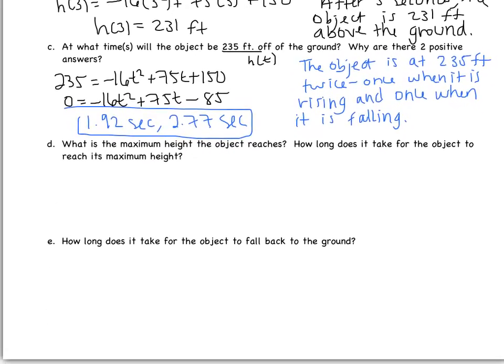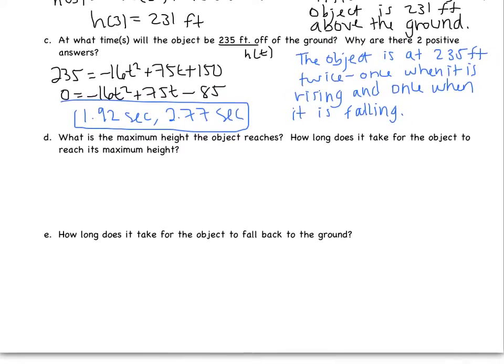So now let's move and look at part D. Part D says, what is the maximum height the object reaches? And then how long does it take for the object to reach its maximum height? Okay, well, the problem gave us a hint. Maximum. Maximum. So we probably have to calculate the maximum. So again, let's look at our equation. We have H of T equals negative 16 T squared, add 75 T, add 150.